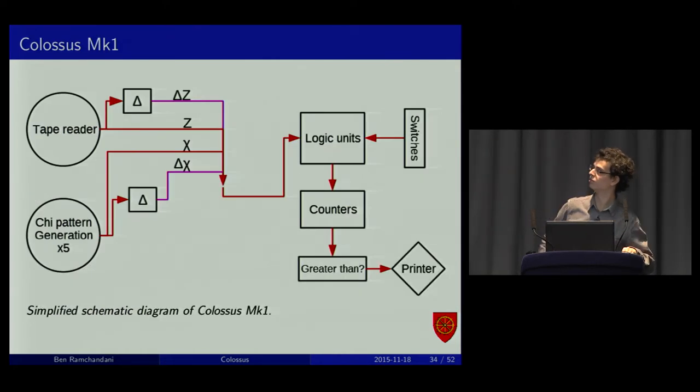This is a schematic diagram of the Colossus Mark I. You had the tape reader. Pattern generation. You'd generate the diffed G and Z. And then the logic units could decide. You'd bring them up to decide whether to use the diffed versions or just the plain versions. You'd do some function. Count the number of times it was true. Print it out.